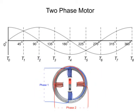The two sinusoidal waves are 90 degrees out of phase. This phase discrepancy is the key to creating rotation of the rotor.